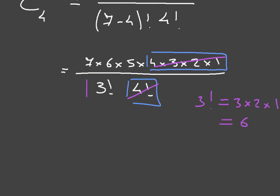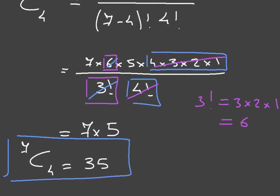We can see right away that this factorial of 3 here and this 6 will cancel out as well. So we are left with 7 times 5, and since 7 times 5 is 35, we can write the final answer: 7C4 is equal to 35. That's how we calculate the binomial coefficient.